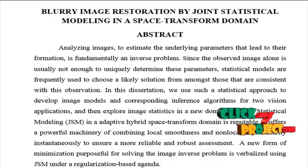Joint statistical modeling in an adaptive hybrid space-transform domain is reputable. It offers a powerful machinery of combining local smoothness and non-local self similarity instantaneously to ensure a more reliable and robust assessment. A new form of minimization purposeful for solving the image inverse problem is verbalized using JSM under a regularization based agenda. It is worth noticing that this displacement field is also used to introduce a bicubic upsampled image as an initialization.